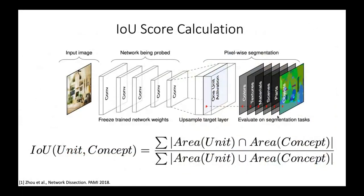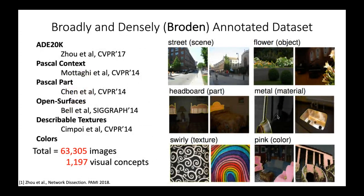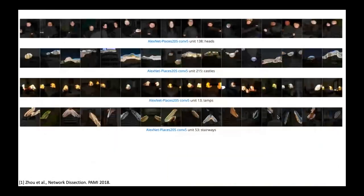To detect those unit-concept correspondences, we build the Broden dataset — a combination of datasets with segmentation ground truth masks containing scene, object, part, material, texture, and color. For example, you have all textures segmented, colors segmented, and you just compare how much region this unit is focusing on the pink color. We have examples of different units: one has a high IOU score on the head, another has high focus on the castle, lamps, and stairways — units with very strong semantics. In statistics on AlexNet, the final layers have 32 units detecting objects, six detecting things, and only one detecting colors. In previous layers there were more texture or color units.